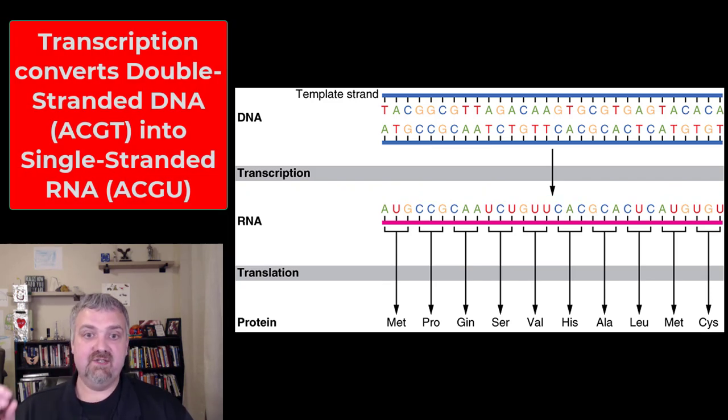So here we see transcription and translation. Transcription, converting DNA to RNA. You're going to take one of these strands of DNA, which is double-stranded, made of A, C, G, and T, and you're going to convert it to RNA, which is single-stranded, made of A, C, G, and U. That's going to be the process of transcription that we'll cover later.